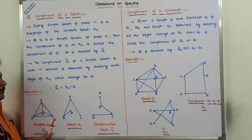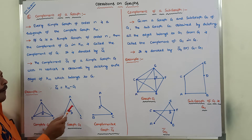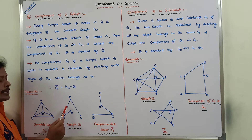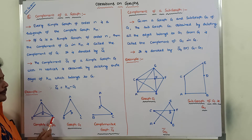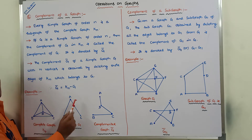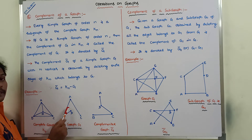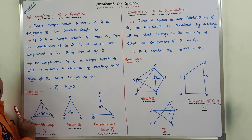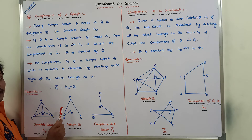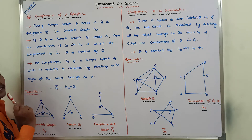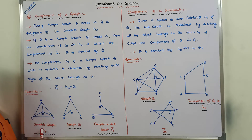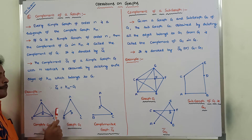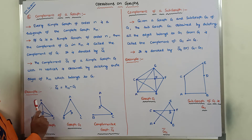This simple graph is a subgraph of complete graph K4 because all the vertices in graph G — A, B, C, D — are also present in K4. All the edges present in graph G — AB, AC, BD — are also there in complete graph K4. Hence, we can say that graph G is a subgraph of complete graph K4.